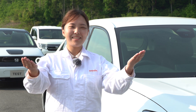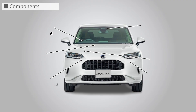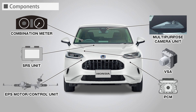First, I will show you the system configuration of the traffic jam assist and a basic description of it. The traffic jam assist consists of a combination meter, multipurpose camera unit, VSA, PCM, EPS motor control unit, SRS unit, and other components.